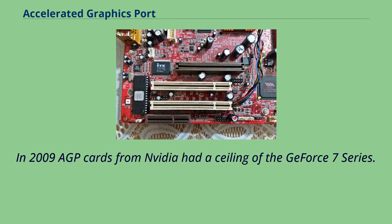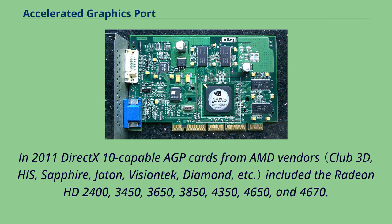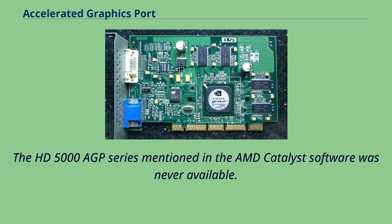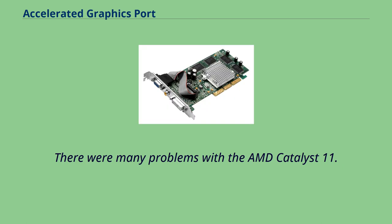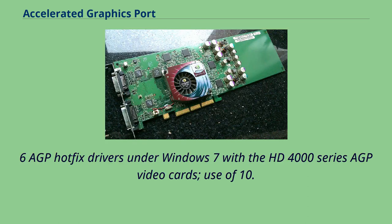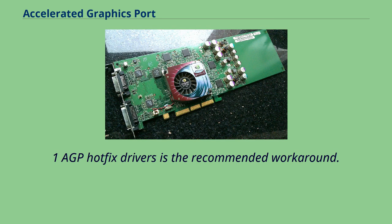In 2009, AGP cards from NVIDIA had a ceiling of the GeForce 7 series. In 2011, DirectX 10-capable AGP cards from AMD vendors included the Radeon HD 2400, 3450, 3650, 3850, 4350, 4650, and 4670. The HD 5000 AGP series mentioned in the AMD Catalyst software was never available. There were many problems with the AMD Catalyst 11.2–11.6 AGP hotfix drivers under Windows 7 with the HD 4000 series AGP video cards; use of 10.12 or 11.1 AGP hotfix drivers is the recommended workaround.